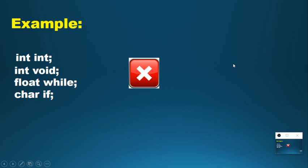Keywords cannot be used as a variable name. For example, if I declare 'int int', the compiler will not accept it because 'int' is already a reserved keyword. Other examples like 'int void', 'float', 'while', 'char', 'if' — all are wrong because the compiler will not accept keywords as variable names.